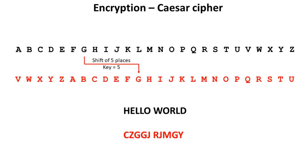The Caesar cipher is an incredibly simplistic cipher. All it does is it takes a letter and then applies a key — the encryption key here is five — and it shifts the alphabet by five places to the right. So the message 'hello world' would end up being encrypted like this.